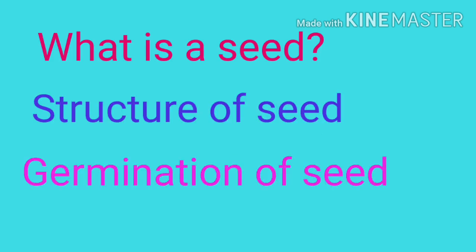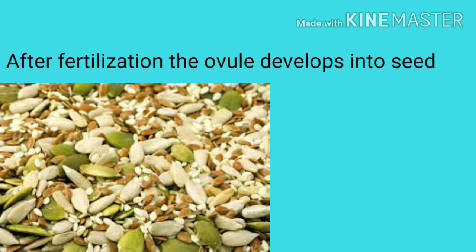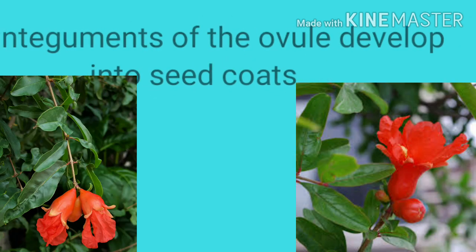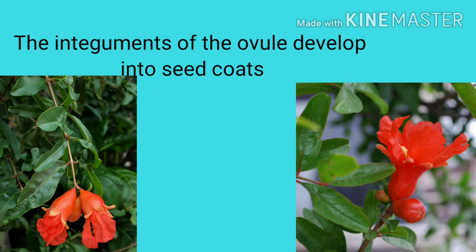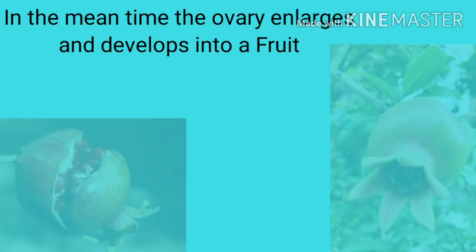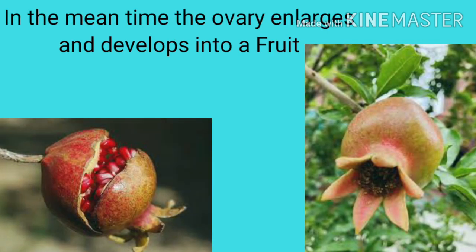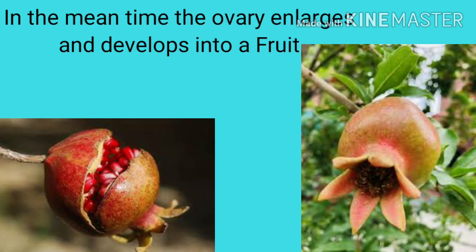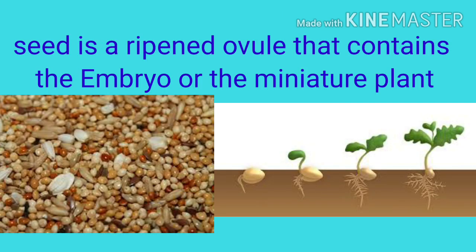After fertilization, the ovule develops into a seed. The integuments of the ovule develop into seed coats. In the meantime, the ovary enlarges and develops into a fruit.